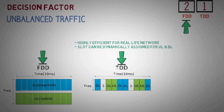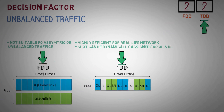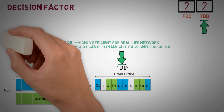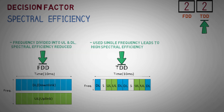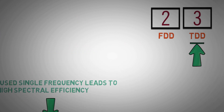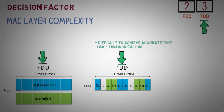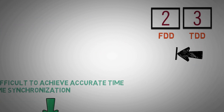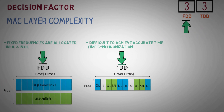Spectral efficiency — TDD uses only one frequency whereas FDD uses two different frequencies, so spectral efficiency in FDD is not as good as TDD. MAC layer complexity — the MAC layer in a TDD system is more complex compared to FDD, as it has to deal with accurate time synchronization between systems, whereas in FDD there is no uplink and downlink switching mechanism at the timescale. Ultimately, it depends on the network operator to choose based on requirements, convenience, or feasibility.